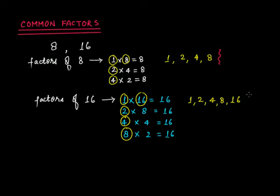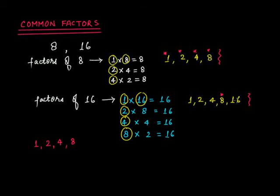From the factors of 8 — which are 1, 2, 4, 8 — and the factors of 16 — which are 1, 2, 4, 8, 16 — what are the common factors? We check: 1 is in both, 2 is in both, 4 is in both, and 8 is in both. But 16 is only in the factors of 16, not in the factors of 8. So the common factors of 8 and 16 are 1, 2, 4, and 8.